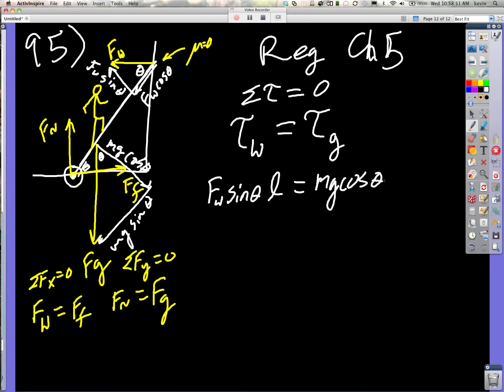So then D is going to equal Fw sine theta L over mg cos theta. And what is Fw? It turns out to be Ff. So we can say that's Ff. And then what is Ff? Fn to Fg, which is going to be mu mg. So I can take that, substitute in there, and I get mu mg sine theta L over mg cos theta. mg's cancel, and I get mu L tan theta.